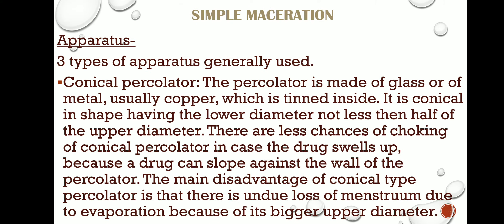Let's start with the simple percolation process. Note: the slide heading reads 'simple maceration' but it should be 'simple percolation' — just skip that heading. The three types of apparatus used in simple percolation are: conical percolator, cylindrical percolator, and steam jacketed percolator.